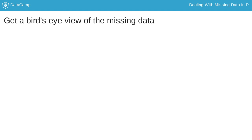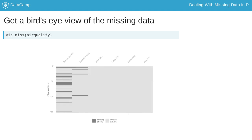When you first get a data set, it can be difficult to get a visceral sense of where the missings are. To get an overview of the amount of missingness, use the vis-miss function from the vis-dat package. Vis-miss produces a heatmap of the missingness, as if the plot corresponded to the data set as a giant spreadsheet, with values colored black for missing and grey for present.